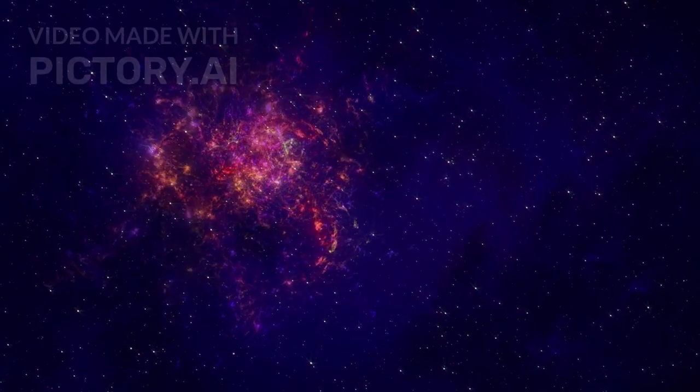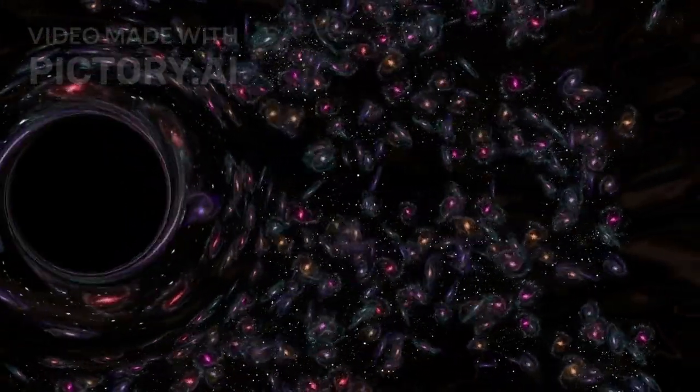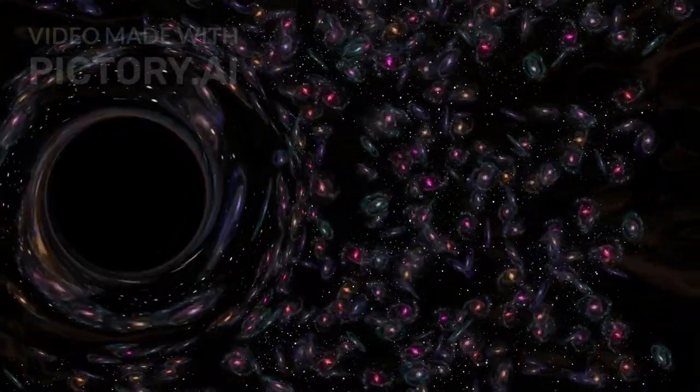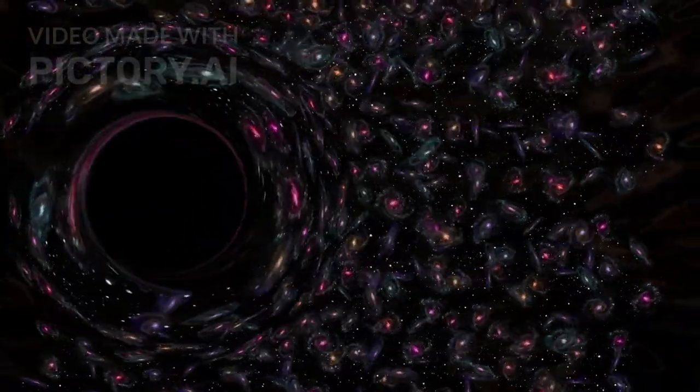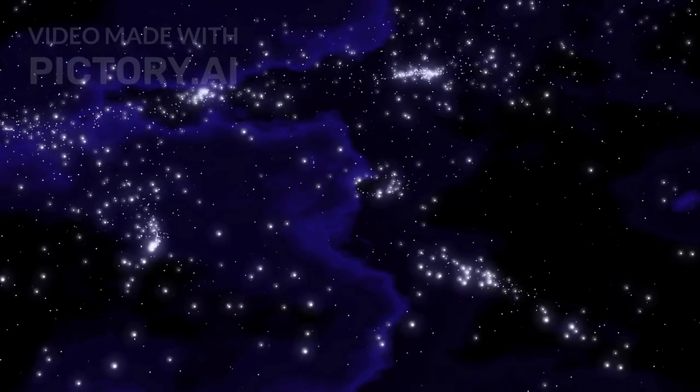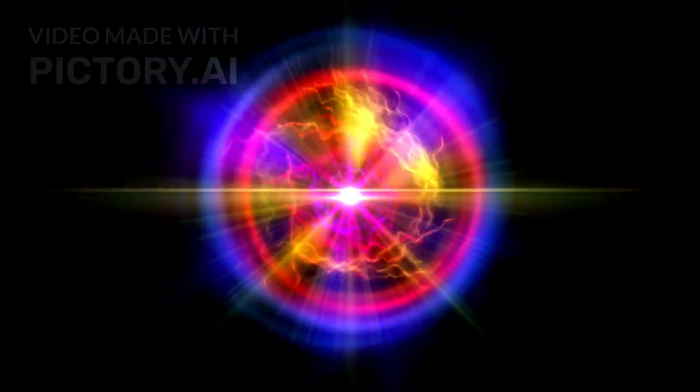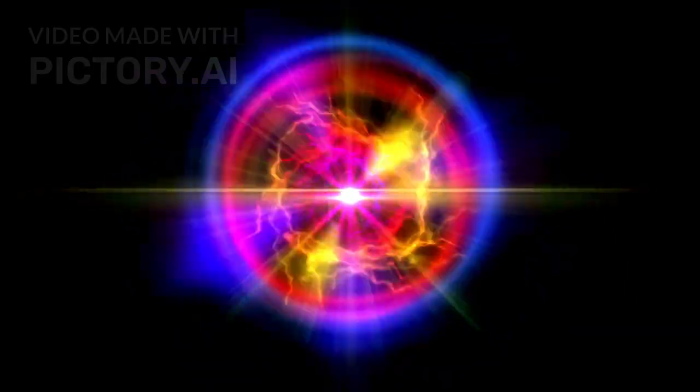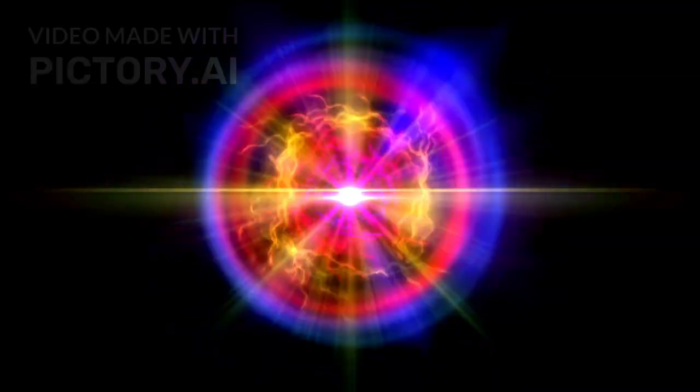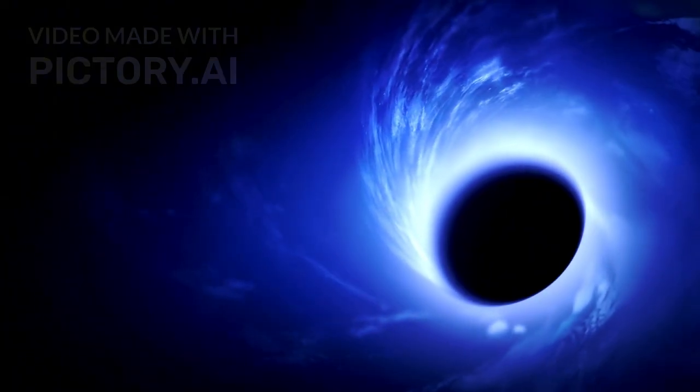Then came perhaps the most puzzling discovery of all. JWST detected huge black holes at the centers of young galaxies. One was estimated to be over a billion times the mass of our sun. According to traditional theories, black holes grow slowly by consuming gas and stars over millions or billions of years. But this black hole already existed when the universe was extremely young. Even advanced computer simulations could not explain it.